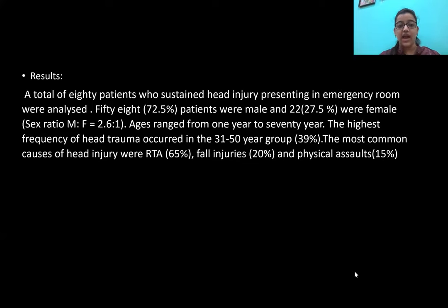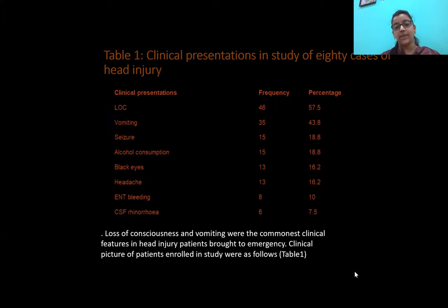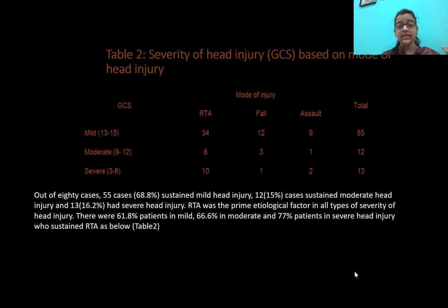The most common cause of head injury was RTA, at approximately 65%. Maximum patients — 46% — presented with loss of consciousness, followed by vomiting at 35%, seizures, alcohol consumption, black eyes, and CSF rhinorrhea was the least. Out of 80 cases, 55 sustained mild head injury, 12% had moderate head injury, and 13 had severe head injury. RTA was the prime etiological factor across all types of severity.